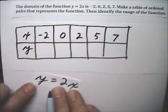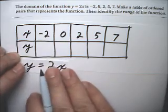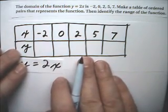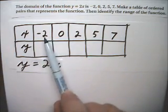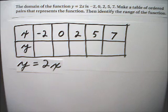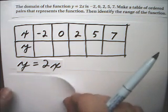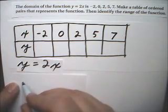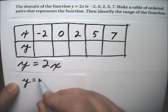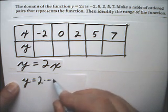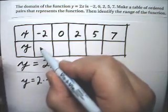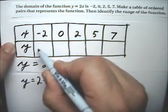The function they gave us is y equals 2x, and the domain are the x values, so we have to put those in. So for negative 2, we end up with y equals 2 times negative 2, and that's negative 4.